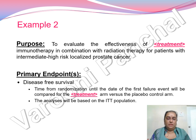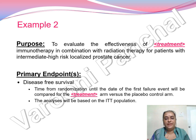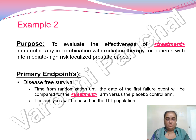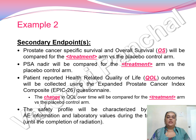There are various ongoing clinical trials for prostate cancer, and let's hope for the best that we get some treatment or cure. For this second example trial, the primary endpoint is disease-free survival — time from randomization until the date of the first failure event, compared for the treatment versus placebo control arm — with analysis based on the ITT population.